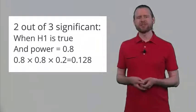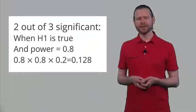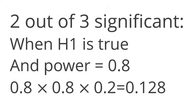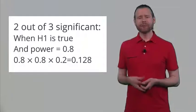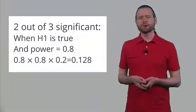What happens if there is a true effect and we find 2 out of 3 significant findings? Assuming 80% power, we find two significant results and one non-significant result. If the alternative hypothesis is true, this equals 0.8 × 0.8 × 0.2 (the probability of a type 2 error), which gives 0.128.